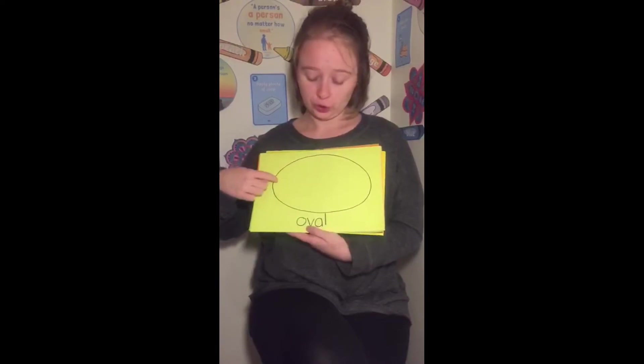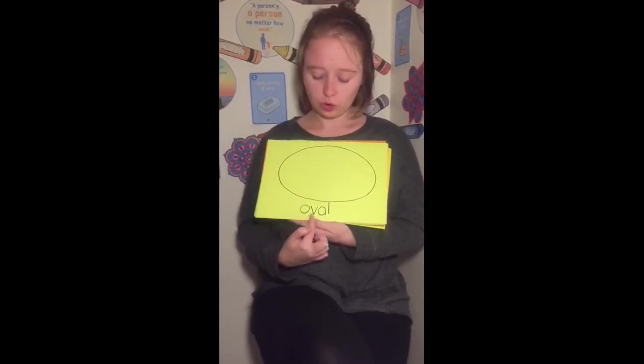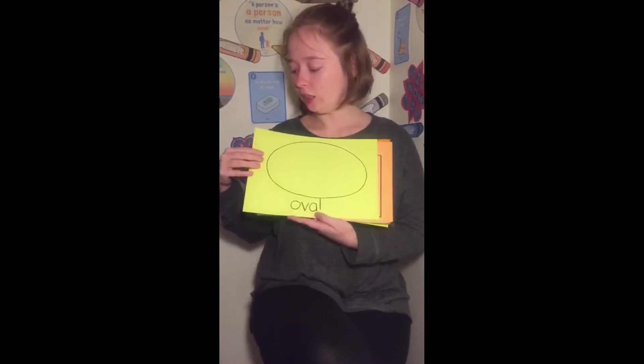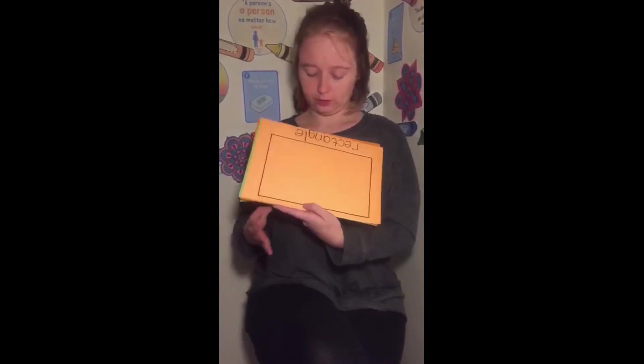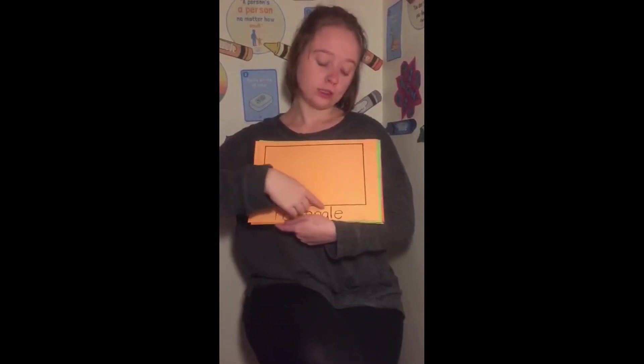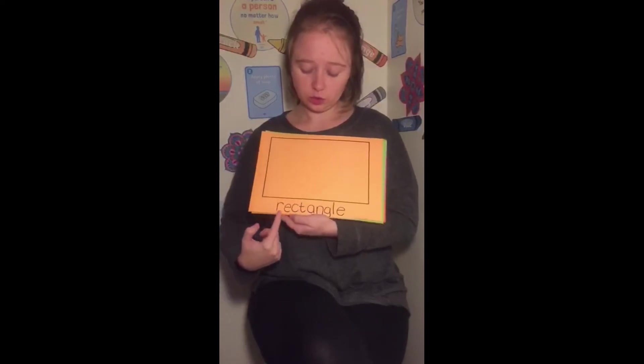So today we are going to look a little bit at our shapes and our colours. I know you all love your colours and know your shapes very well, but we're just going to look at a few shapes today. So who can tell me what shape this is? If it looks a little bit like a circle but it's longer at the sides, it's an oval. And what colour is this? Yellow, very good. Now, if it has four corners and one side is longer than the other side, it is a rectangle. And what colour is this rectangle drawn on? Orange, very good.